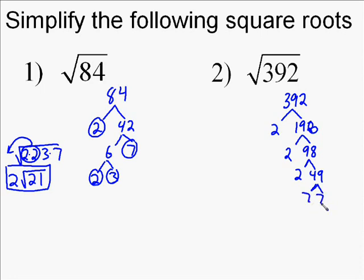So I group the pairs together. 2 times 2 times 7 times 7. And then I've got 2 left over at the end. So I'm going to have 7 times 7 and then times 2.